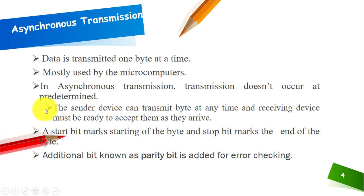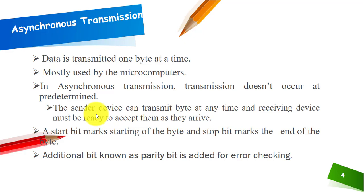This transmission is mostly used by microcomputers. Transmission doesn't occur at pre-determined times, meaning the sending and receiving devices are not synchronized in asynchronous transmission. The sending device can transmit a byte at any time and the receiving device must be ready to accept the data as it arrives.